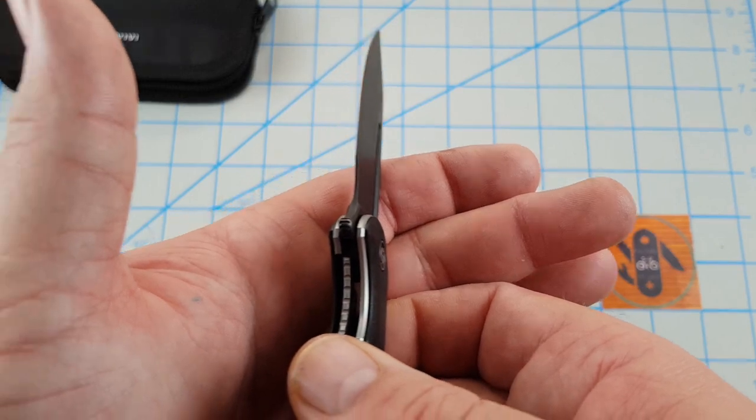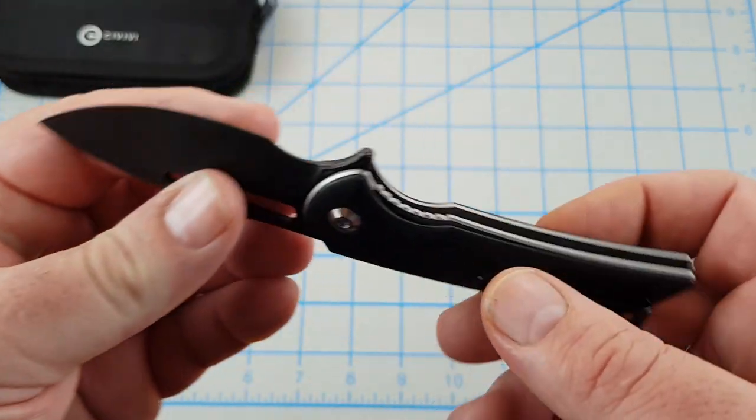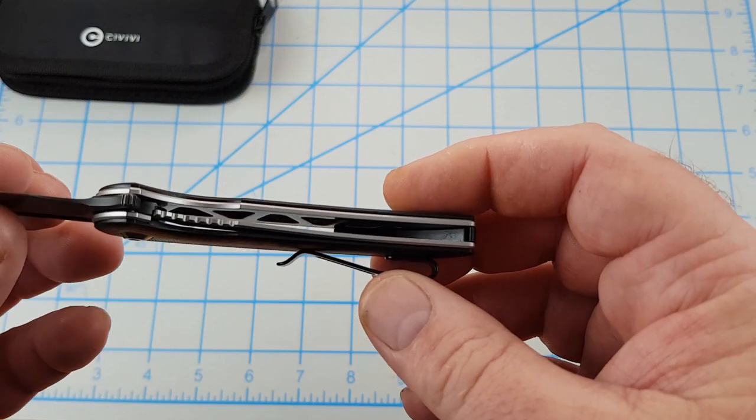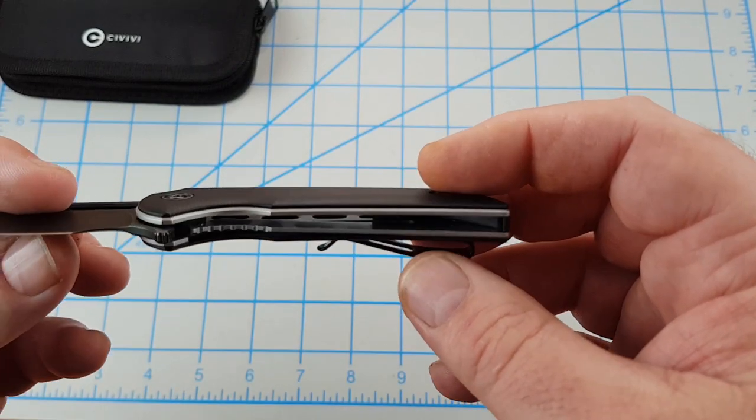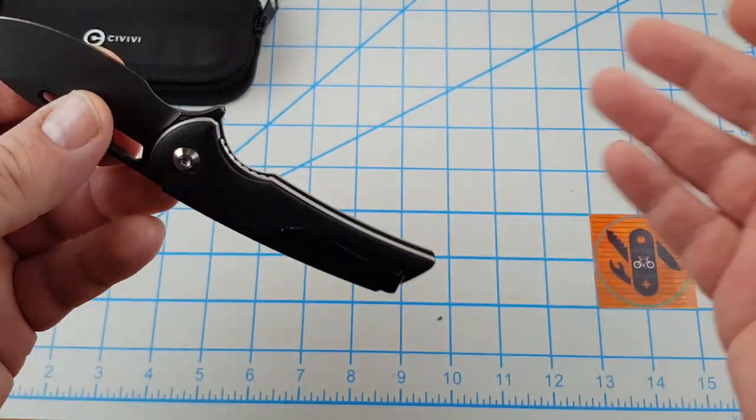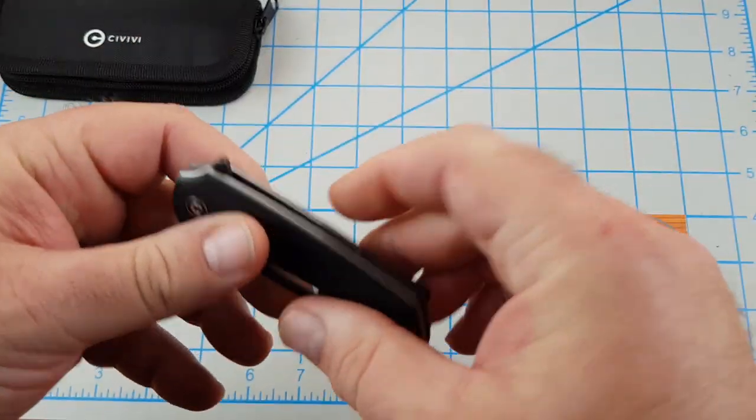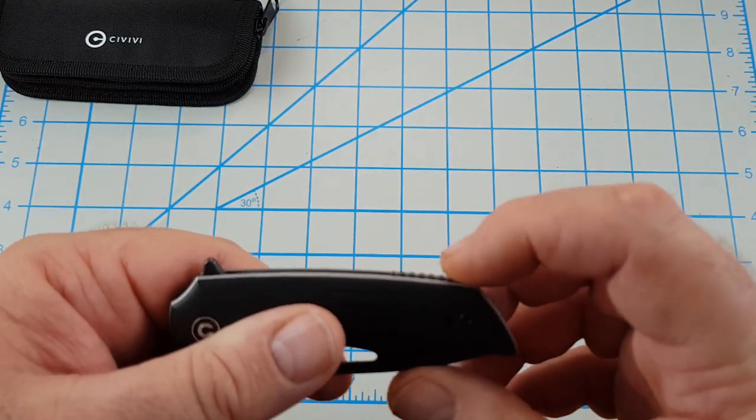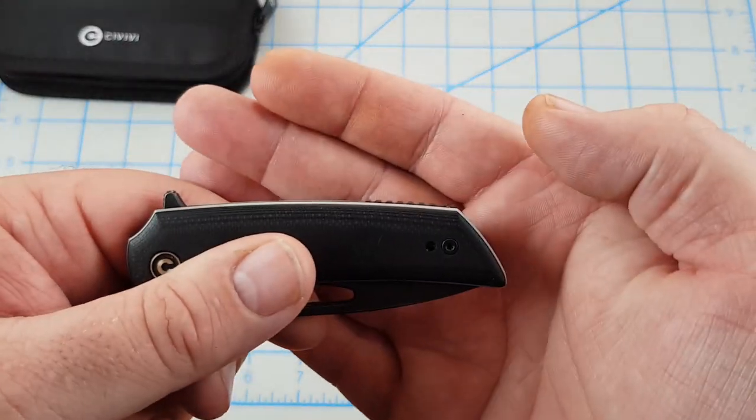It rides on bearings, action is pretty good. Liner lock, lockup's decent, probably 40 percent. Stainless steel liners are skeletonized, you can see that on both sides. That reduces the weight.